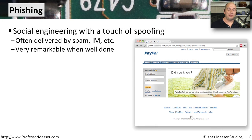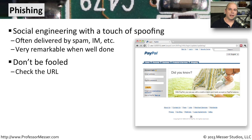The bad guys have found it exceptionally easy to get information without even installing software on your computer through a method called phishing. Phishing combines a little social engineering and a little spoofing to get your username and password. You usually see this as an email that looks like it's from someone you trust, saying something like "I saw a funny video of you on the internet, click here." When you click, it takes you to what looks like YouTube, you enter your credentials — but it was really the bad guy's site, and now they have your credentials.